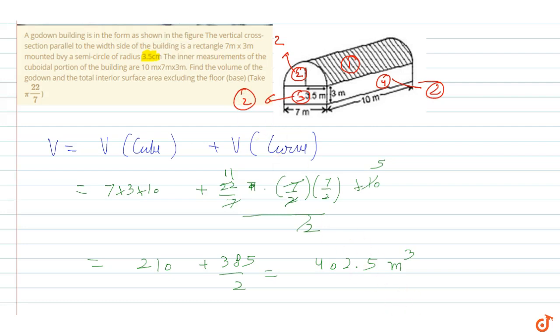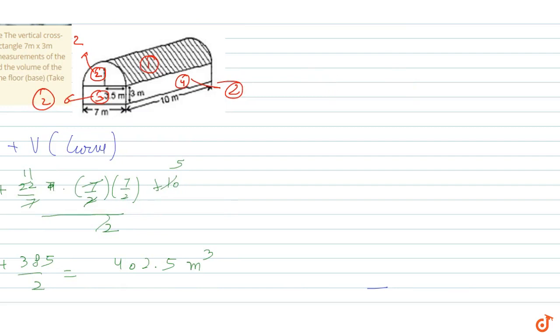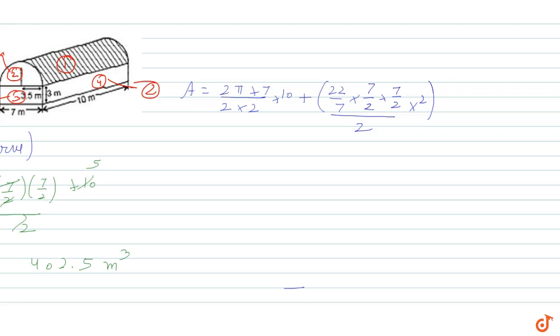If I write the entire area: First, I will write the curved part. The curved part is 2 pi r into 10. 2 pi r is circumference, it is half. 2 pi r is 3.5, I can say 7 by 2, by 2 into 10. Plus, this circular part is pi r square. 22 by 7, r is 7 by 2 into 7 by 2. Pi r square upon half, because this is semicircle, and into two times.